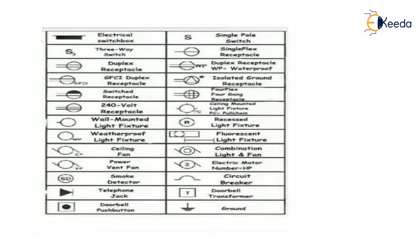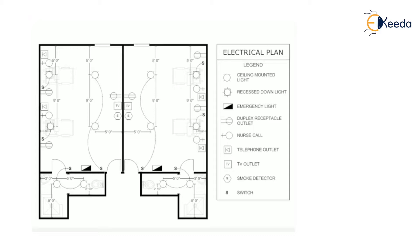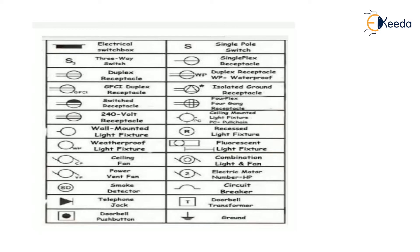By using these symbols we can make an electric layout or electric plan of a building. We generally use a ceiling fan, then a ceiling mounted light — those kinds of symbols which we mostly use. You can see here, in the plan of an electric layout, there is one circle with four corner lines — that is the symbol of a ceiling mounted light, as per IS 962.